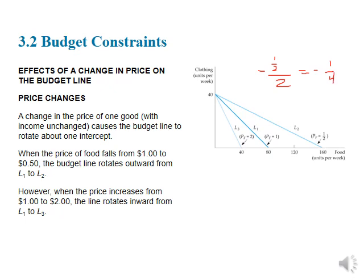So our intercept on the clothing axis hasn't changed, but our slope has changed, and our intercept on the food axis has changed. Alternatively, if food gets more expensive — if the price goes from $1 for a unit of food to $2 for a unit of food — our budget line rotates in. And here you'll notice that the price of food is the same as the price of clothing, so we're going to have a slope of minus 1 and we're going to have equal intercepts.